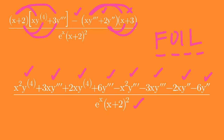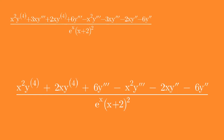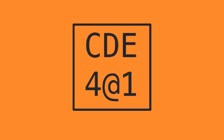This is the final answer. There are 6 terms in the numerator from the original 8 terms, because there are similar terms that combine and the result is 0.